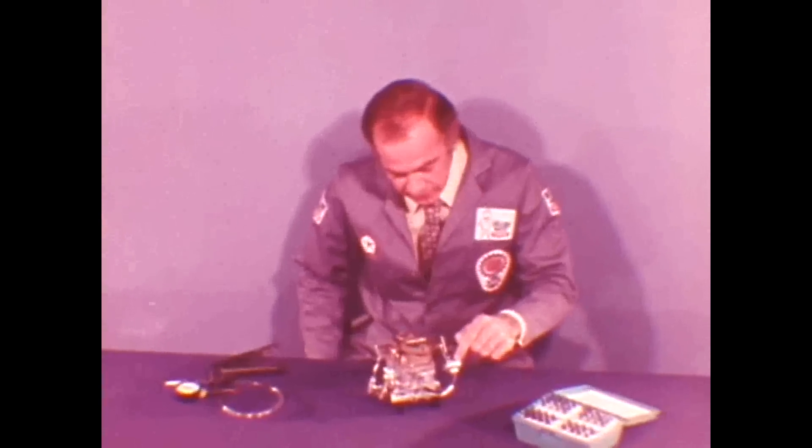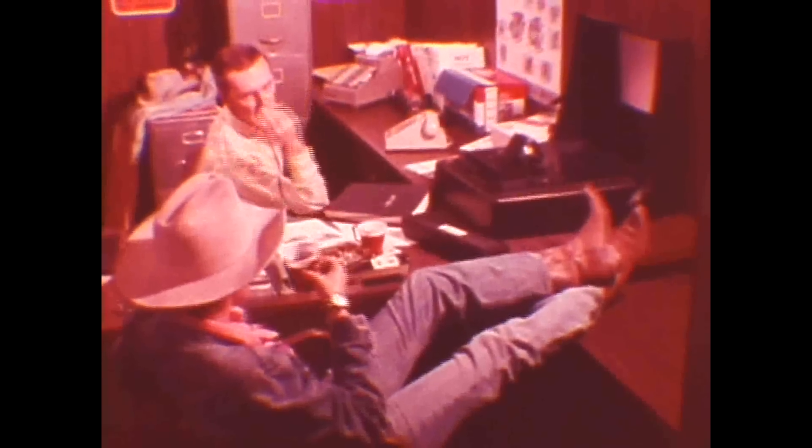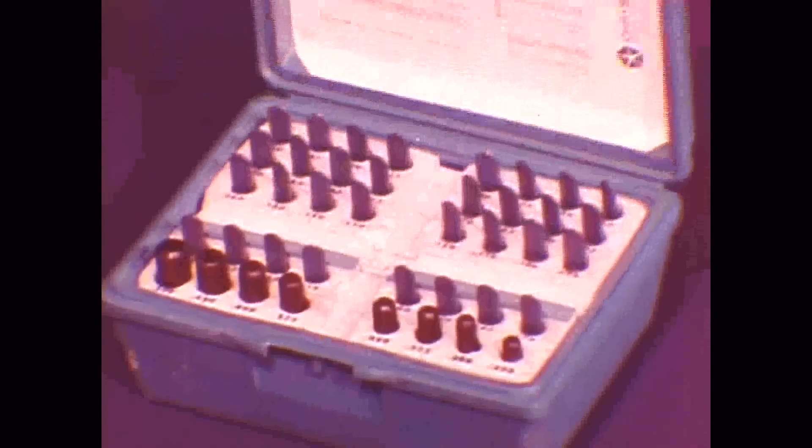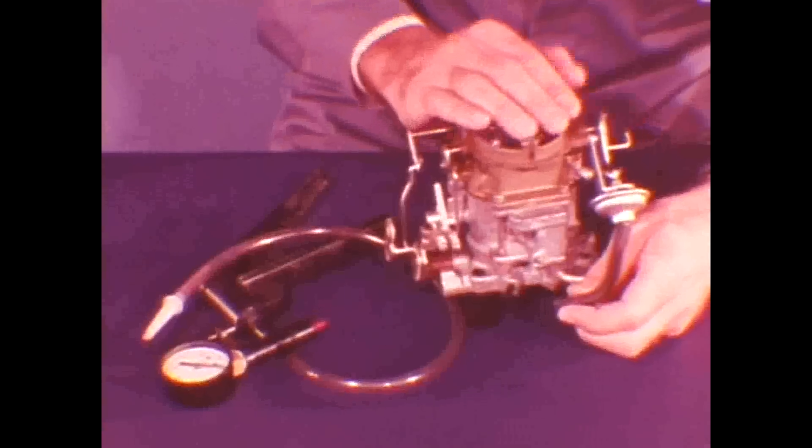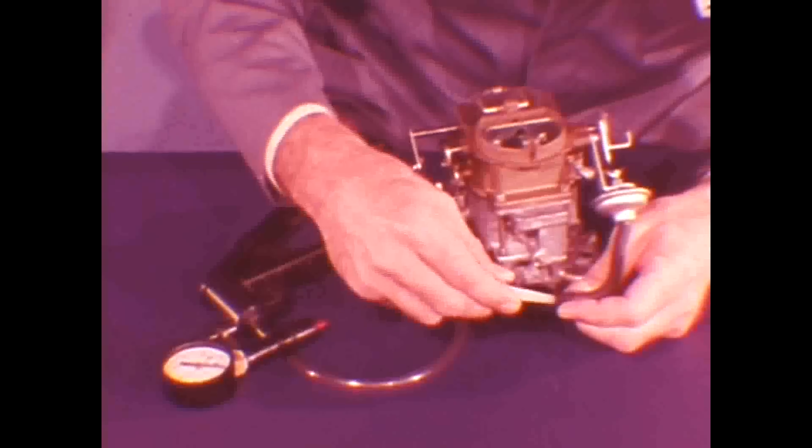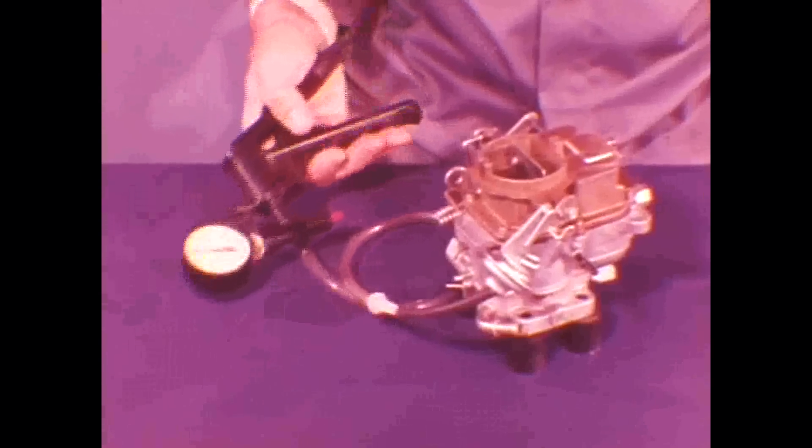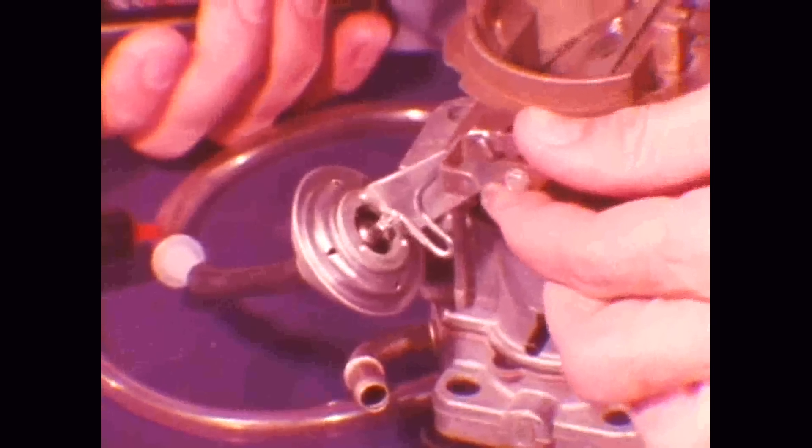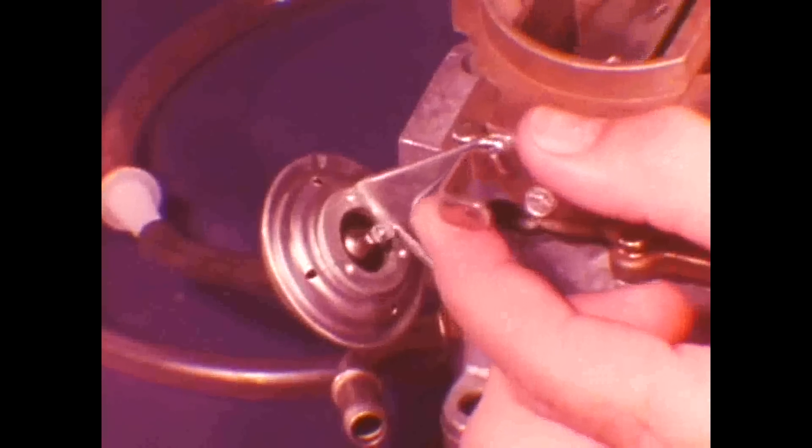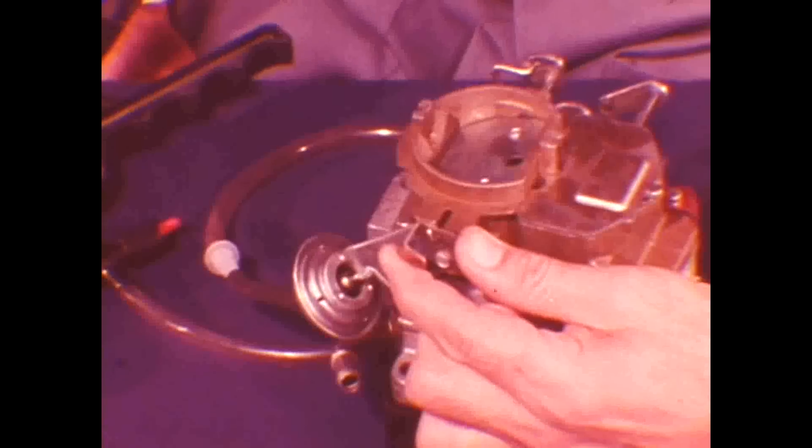Now that we understand the importance of setting the fast idle cam position, let's get to vacuum kick. Now Sam, the vacuum kick is not a new way to score a point after touchdown. For the vacuum kick adjustment, select the correct gauge. Then with a vacuum hand pump connected into the vacuum diaphragm hose, open the throttle to clear the fast idle cam and close the choke by hand. Release the throttle. Apply about 15 inches of vacuum, then slowly move the choke valve toward the closed position. The vacuum kick stem will pull out of the diaphragm with little resistance. Stop right there. Let's do that again. Too much closing pressure on the choke valve will force the diaphragm to stretch, causing the choke to close more than it should. So take it easy on choke closing force.